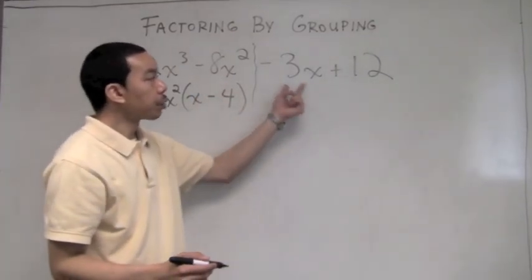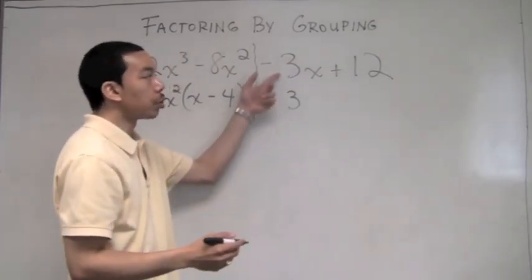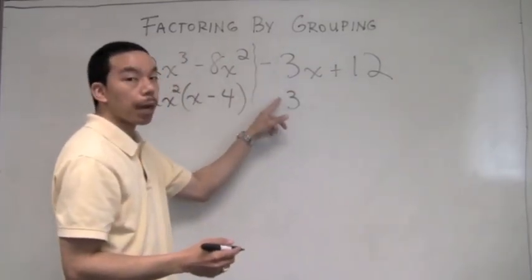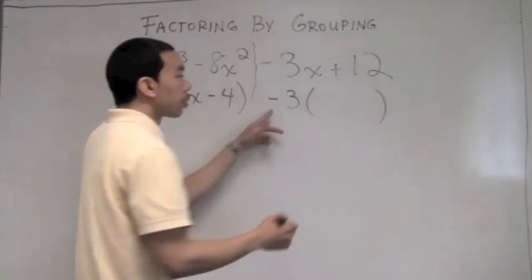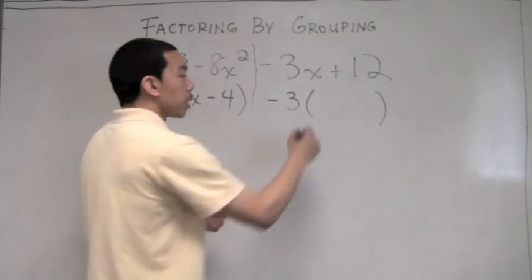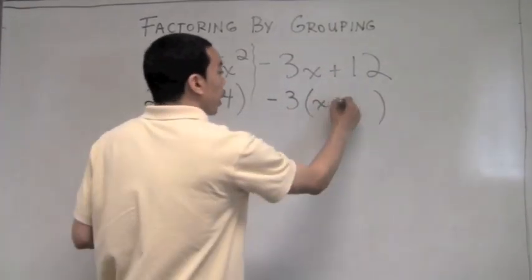The GCF of 3 and 12 is 3. But we remember that when the leading coefficient is negative, we'll use the opposite of this positive 3, negative. So negative 3 goes into negative 3x, x times. Negative 3 goes into a positive 12, negative 4 times.